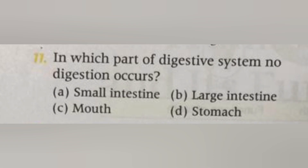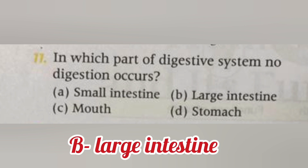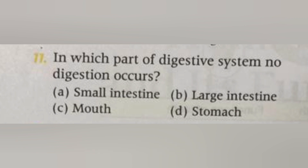Next, in which part of the digestive system does no digestion occur? A. Small intestine. B. Large intestine. C. Mouth. D. Stomach. The answer is B, large intestine. The digestive system is made of many organs that work together for proper digestion of food.